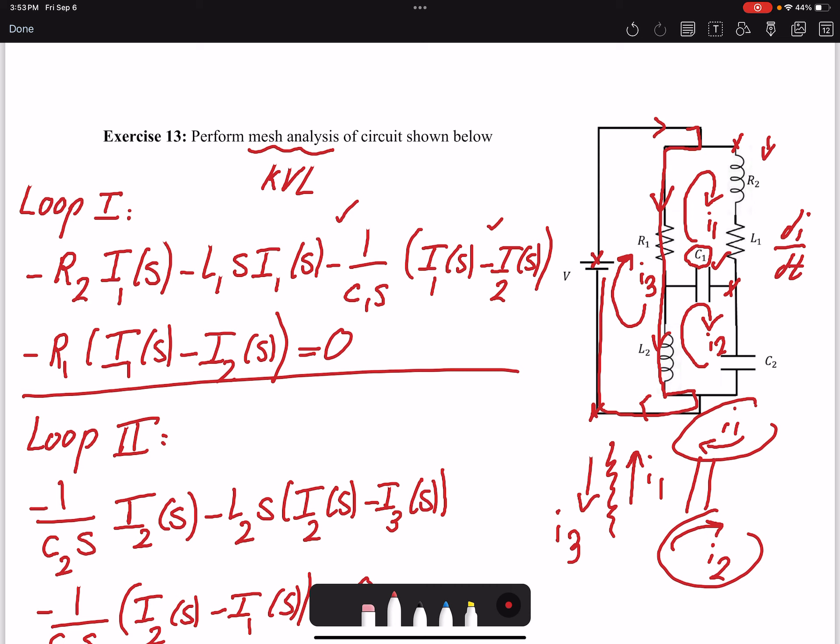It really didn't matter that we used these directions for I1, I2, and I3. It could be any other directions. At the end, the sign would take care of itself. So it's not an assumption that you need to correct or anything. That's what we get, and then for each element, we can find a corresponding current based on what loop each element is part of.